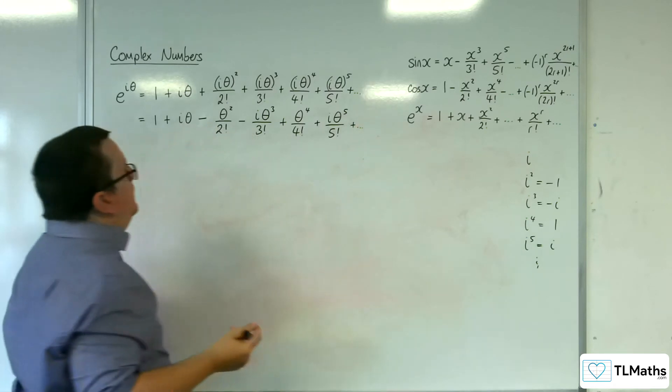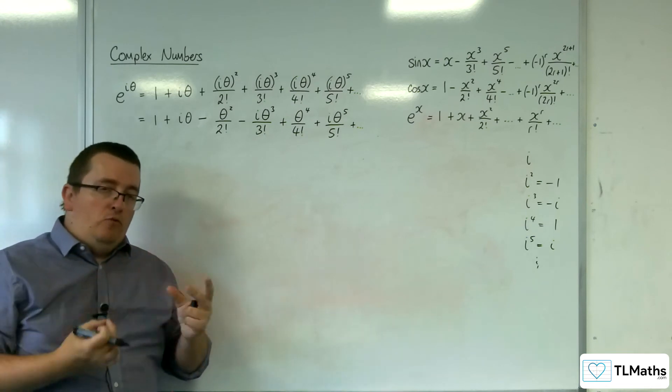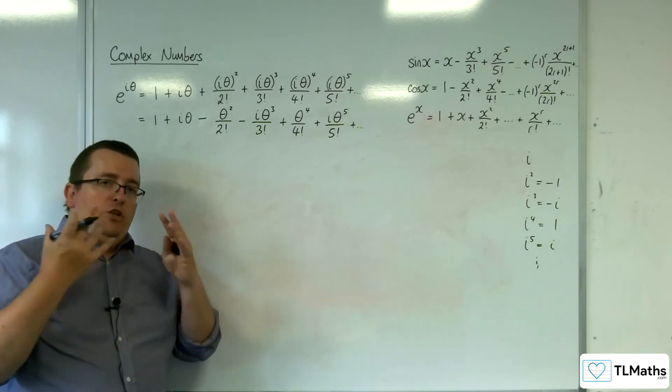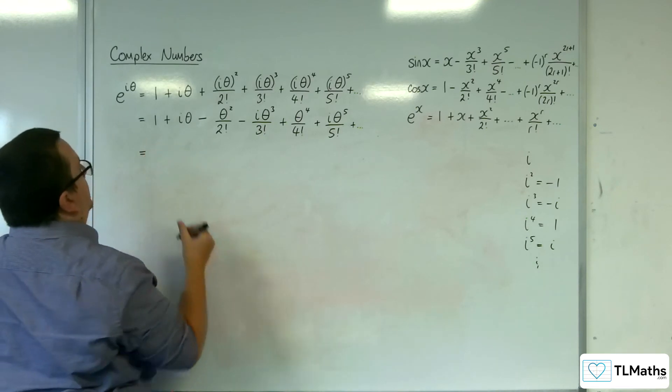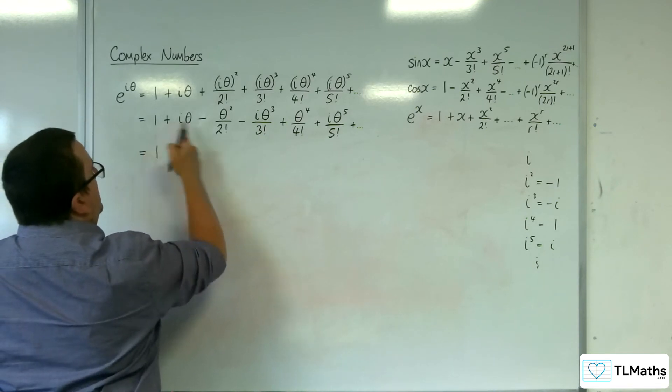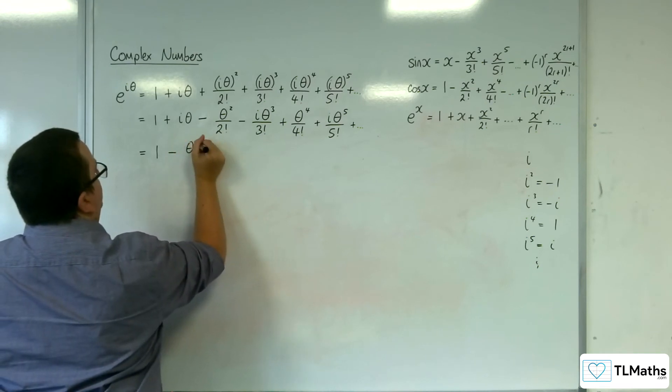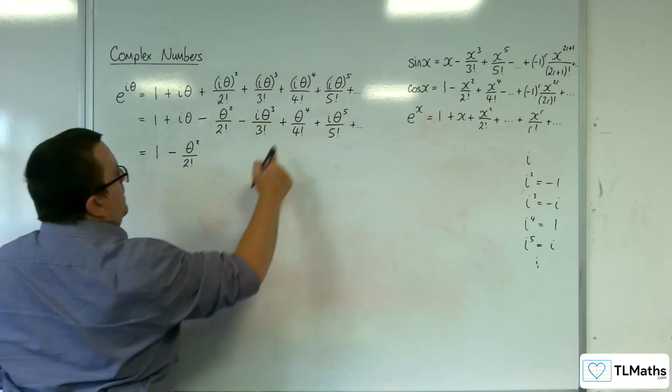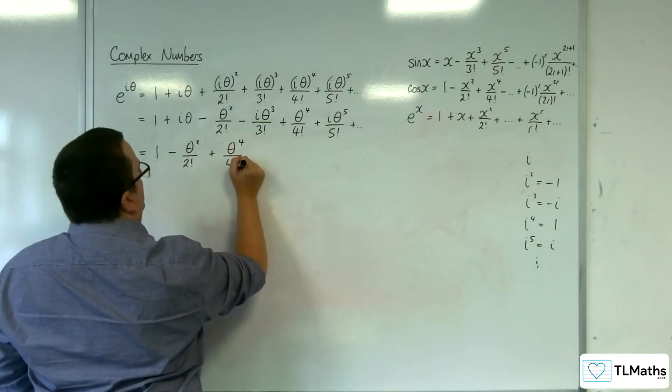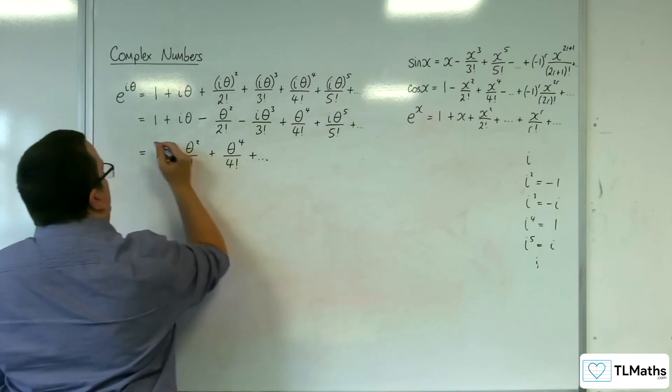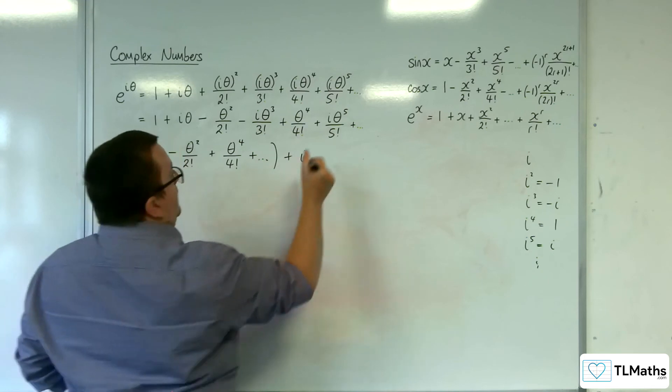Plus dot, dot, dot. Now, what we can then do is we can separate this infinite series into its real and imaginary parts. So, what real parts do we have? Well, we've got the 1, then we've got the take away theta squared over 2 factorial. Then we've got the theta to the 4 over 4 factorial, plus an infinite load of times, plus i times,